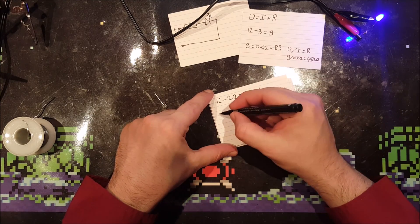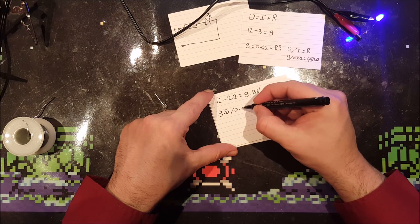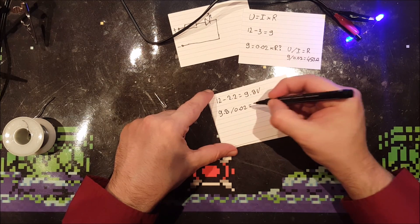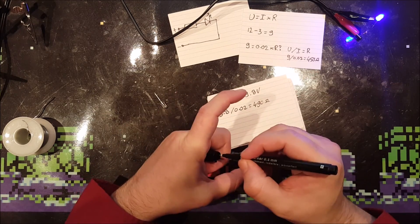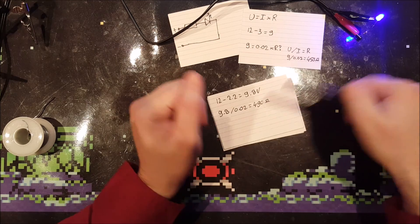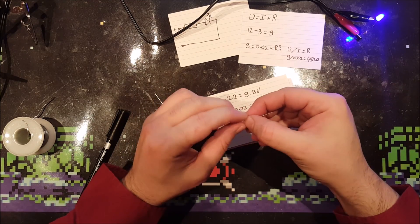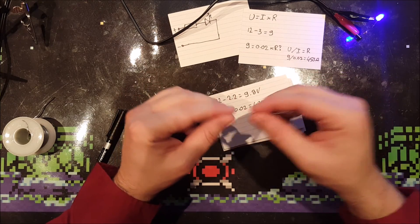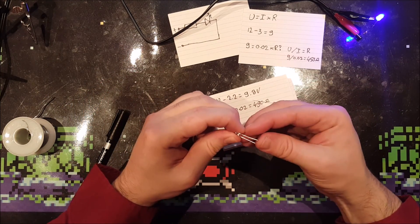9.8 divided by the 20 milliamps is 490 ohms. Again, you can use the 470 ohm resistor and push the LED to its limits, or use the 510 ohm resistor and make the LED live a little longer.